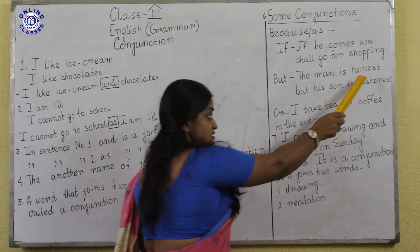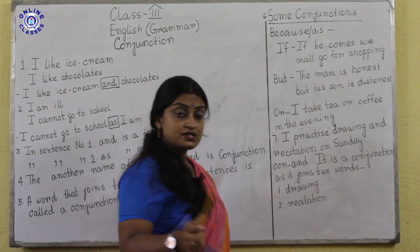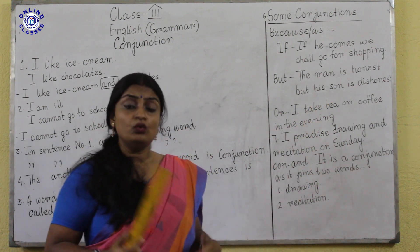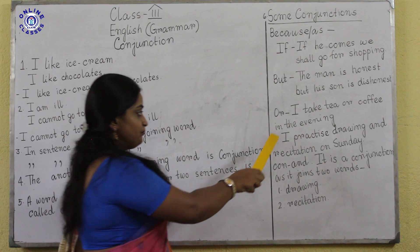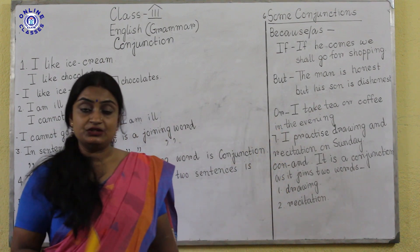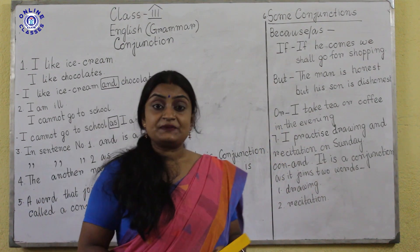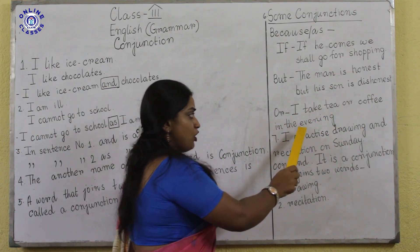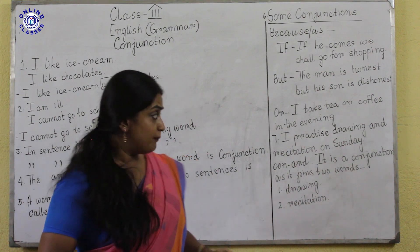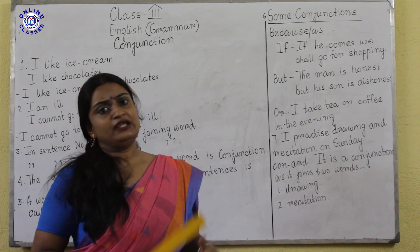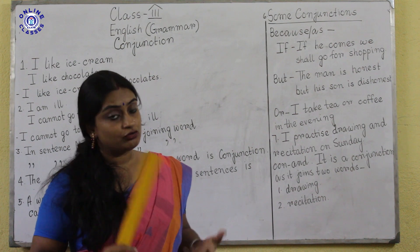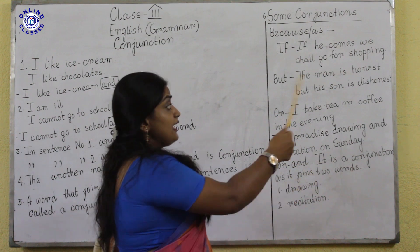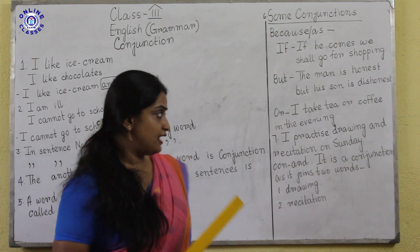The word 'but' joins two opposite ideas — for example, 'he is honest but his son is dishonest.' 'Honest' and 'dishonest' are opposite words. We also use 'or' to express optional ideas, like: I take tea or coffee in the evening. So 'or' expresses optional ideas.